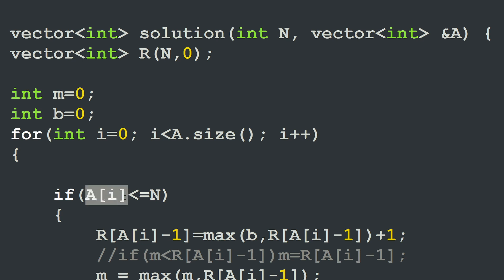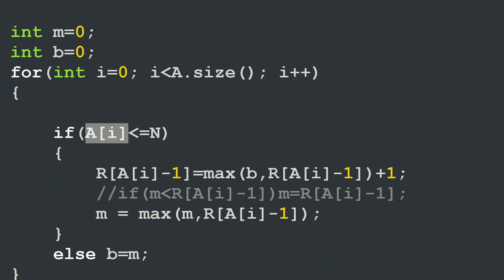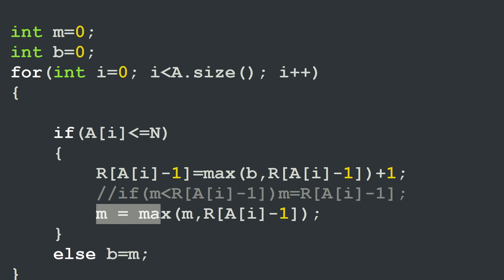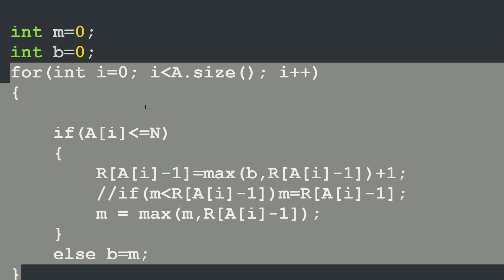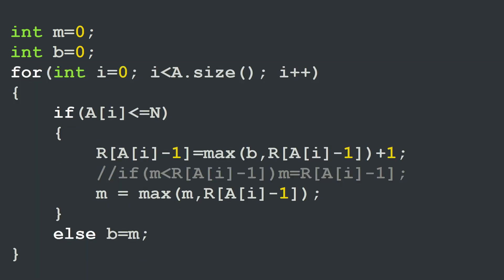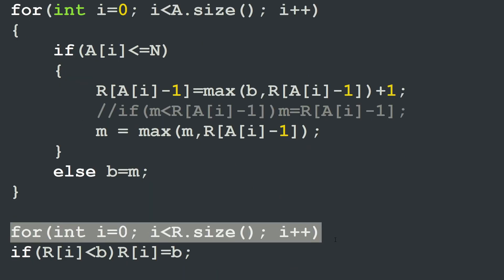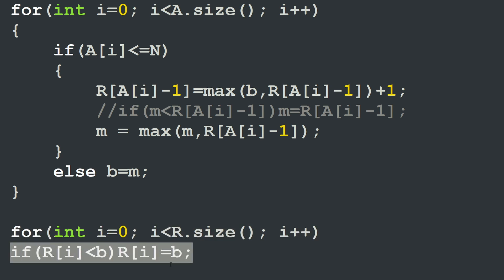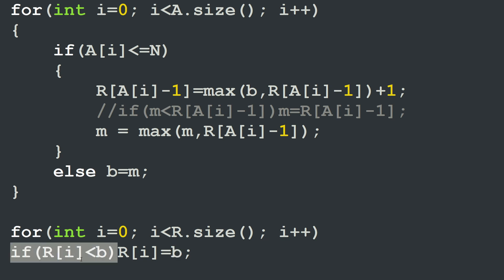In the else condition, if a[i] is greater than n, we set b equal to m. That's the entire loop over array a. At the end, we have the problem of elements that were never visited — their counters will be zero, which is wrong. So we iterate over the results vector one more time to ensure all elements have at least the value of b: if r[i] is less than b, we set r[i] equal to b. Then we return r. This gives 100% correctness and 100% performance.